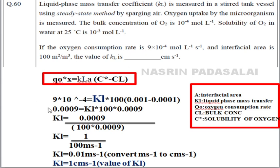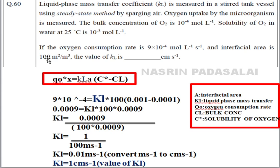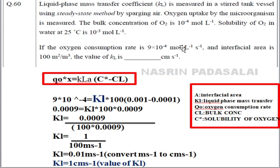Substituting values: 9×10⁻⁴ = kL × 100 × (10⁻³ − 10⁻⁴) = kL × 100 × 9×10⁻⁴. Rearranging, kL = 0.01 m/s. Since they ask for centimeters per second, convert: 0.01 m/s = 1 cm/s. So the liquid phase mass transfer coefficient kL = 1 cm/s.